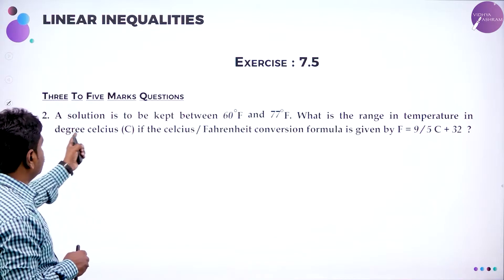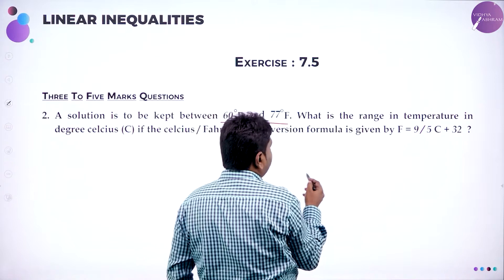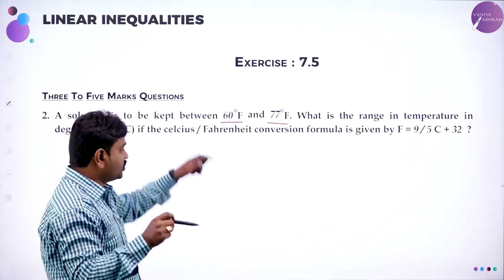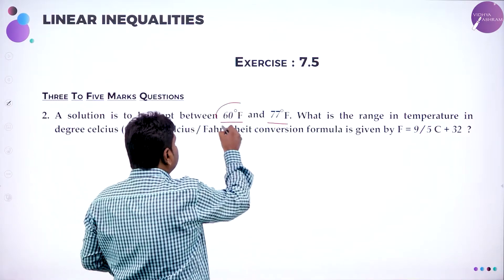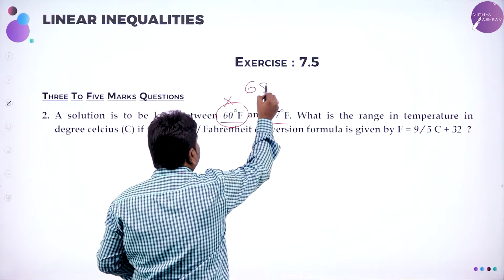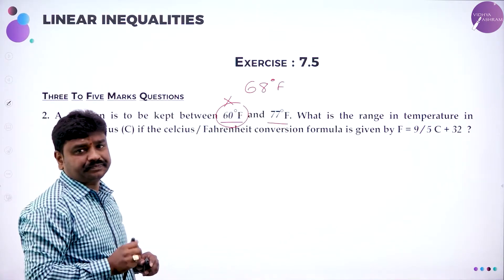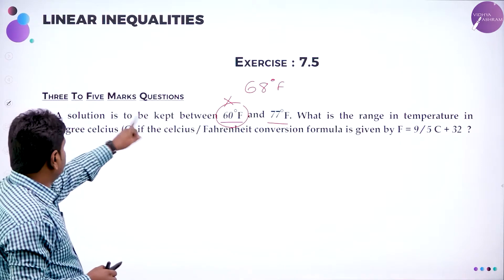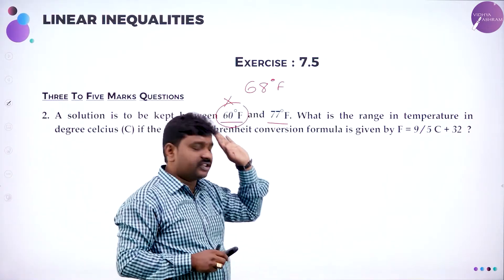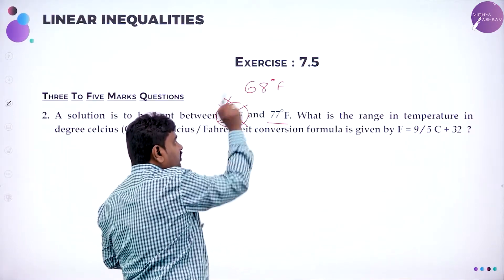Next question: a solution is to be kept between T degrees Fahrenheit — 77 degrees Fahrenheit. What is the range of temperature? Dear students, in your textbook this question is printed, but the value given is wrong. Make it 68 degrees Fahrenheit — then your answer in the question book matches. So the solution should be kept between 68 Fahrenheit and 77 Fahrenheit — that is the question.